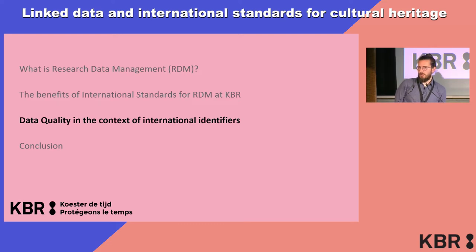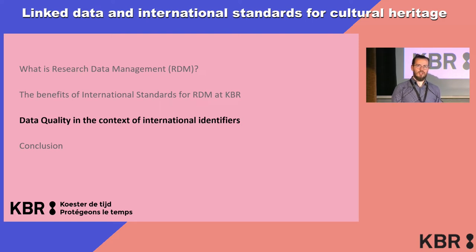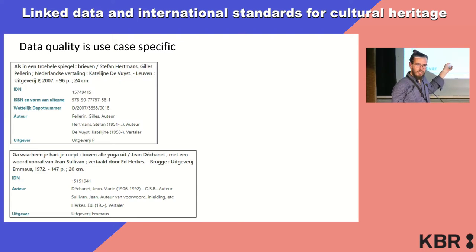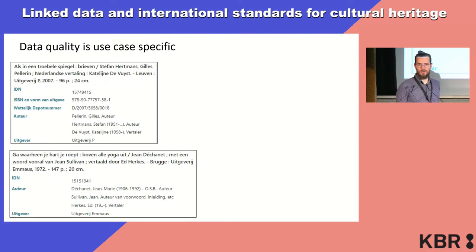Data quality is already a big thing, especially if you use data from different sources, but often even within the same source — because over time the perception of quality might change and things may be catalogued differently than they used to be. To give one example, these are two records from our catalogue. We can see the title in bold, and then there's structured information like ISBN number or authors. But data quality is use-case specific — what is good quality? Let's define a use case.